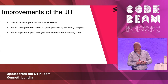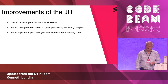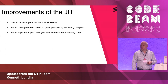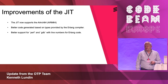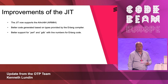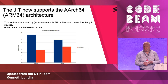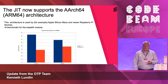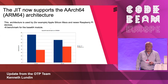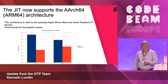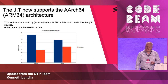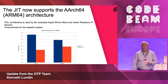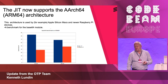Another interesting thing in OTP 25 is more improvements to the JIT, for example support for the ARM64 architecture, which is used in Apple Silicon Macs and newer Raspberry Pi. There is also better code generation based on types. Here is a benchmark from the base64 encode and decode functions: the blue bars show iterations with JIT and the red ones without. Encode is about 2.5 times faster and decode is 75% faster.